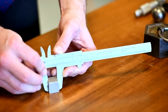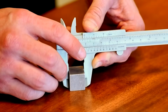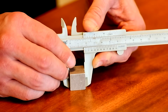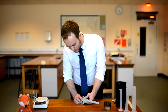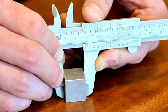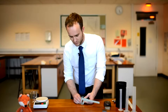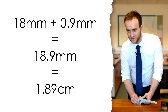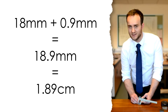We're going to see where the zero on our bottom scale lines up on the top scale. I can see that it goes all the way past 1.8 centimetres, but the zero has not gone past 1.9 centimetres. So we know the width is 1.8 centimetres plus a little bit more. Looking at which line on the bottom scale lines up best with the top scale, I can see it's the number 9 that best lines up. That means we have 9 tenths of a millimetre extra. So: 18 millimetres plus 0.9 millimetres gives us a final width of 1.89 centimetres.